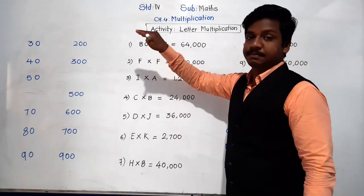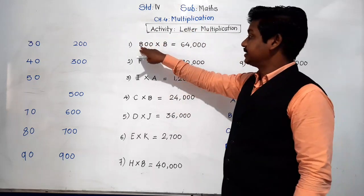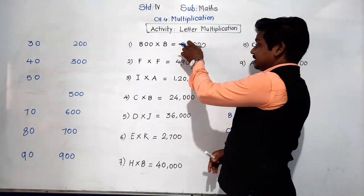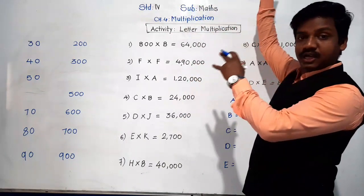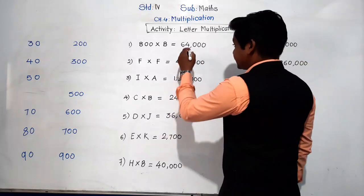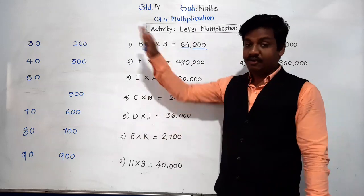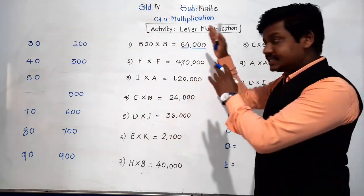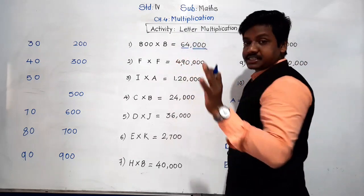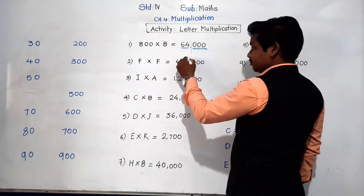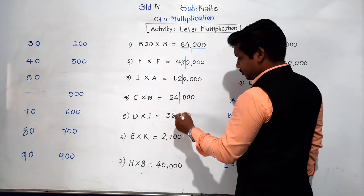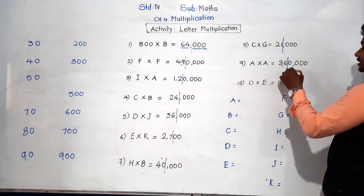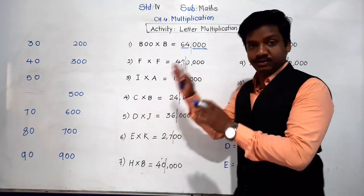Let's look at the first example: 800 × B = 64,000. Don't think about 64,000 as a whole. Think first about 64, and how we used the idea of multiplying by 10, 100, 1000, or their multiples. We will make two parts: the digit part and the zeros. For example: 64 and three zeros, 45 and four zeros, 12 and four zeros, 24 and three zeros, 36 and three zeros, 27 and two zeros, 40 and three zeros, 21 and three zeros, 81 and remaining zeros. This way we have to see — then only we will get the answers.